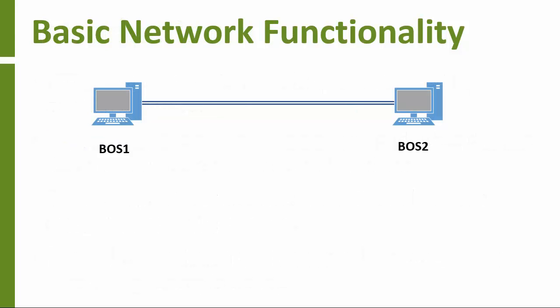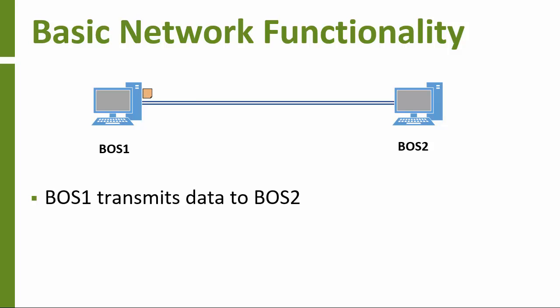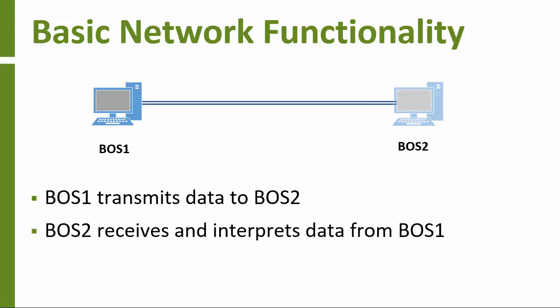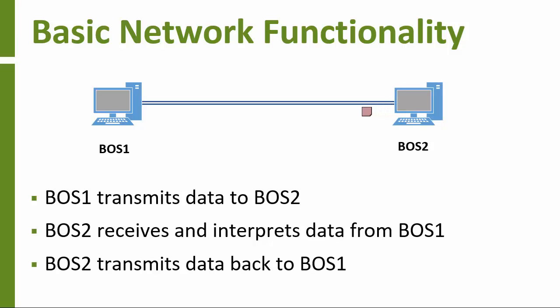For even the simplest network like this one, there are a couple key pieces of functionality that have to exist. The computer named BOS-1 has to be able to transmit a message to the computer named BOS-2. BOS-2 has to be able to understand the message from BOS-1, and it has to be able to respond by sending a message back to BOS-1.